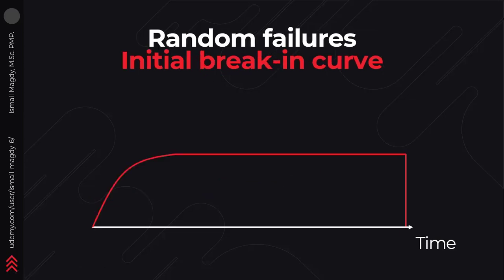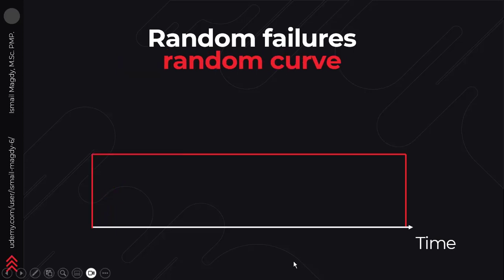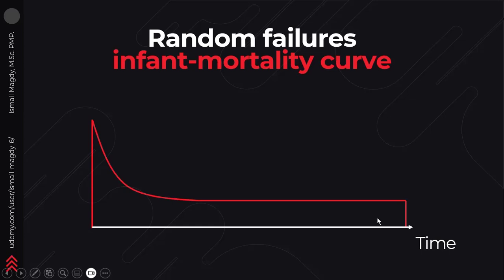After that we have the first random failure curve, which is called the initial break-in curve. In this curve we have a low number of failures in the beginning, after that it becomes a high and random number of failures. The second curve is the random curve, which has a totally random distribution of failures through the lifetime of the asset. Finally, the last random failure curve is called the infant mortality curve, where we expect a high failure rate in the beginning of the asset's lifetime, after which it decreases to its minimum rate.